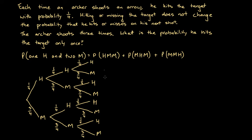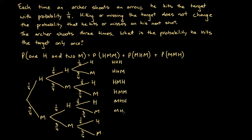These are all the possibilities on the right. This outcome is associated with hitting the first, second, and third shots: H H H. Then we've got H H M, H M H, H M M, M H H, M H M, M M H, and M M M.